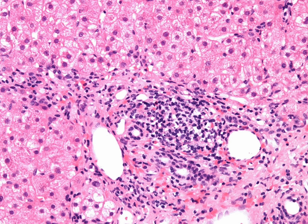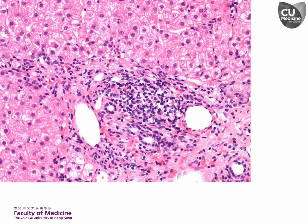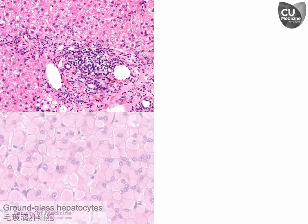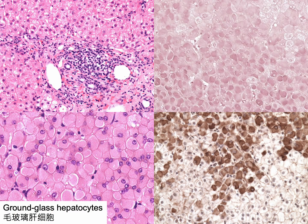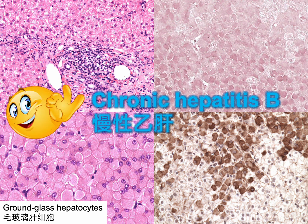The portal tract in this example shows mild lymphocyte predominant inflammation. If we identify ground glass hepatocytes, which might be further confirmed by Orcein stain or immunohistochemistry for hepatitis B surface antigen, we could establish a definite diagnosis of chronic hepatitis B.